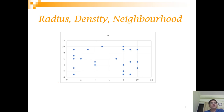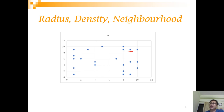Let's say you have a very simple scenario with only two independent variables and you want to cluster them. If I pick one point and want to find the density of this point, by intuition, density is always associated with an area. So I can draw a circle around this point with some arbitrary radius, and in that circle I have four points including itself — that is the density associated with this particular point.